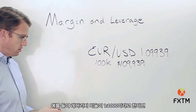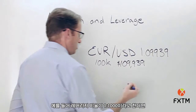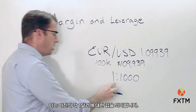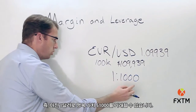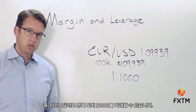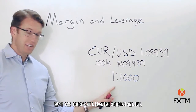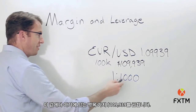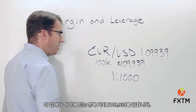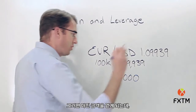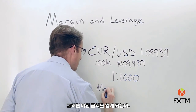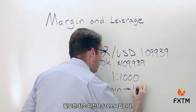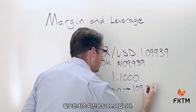If our leverage ratio is 1 to 1,000, that means that for each dollar of margin we're controlling $1,000 worth of notional value. So if we take 1 divided by 1,000, we get 0.001. We can then multiply that by the notional value of $109,939, and what we get is a margin amount. The minimum margin required is going to be $109.94.